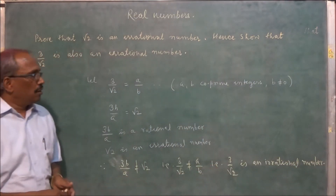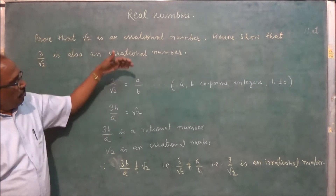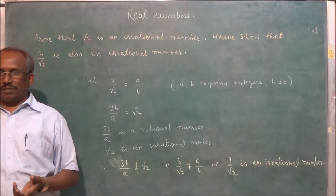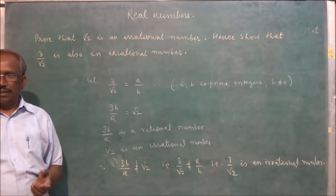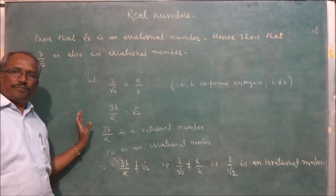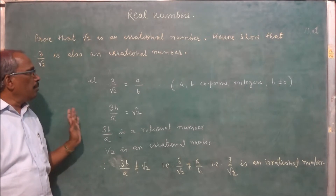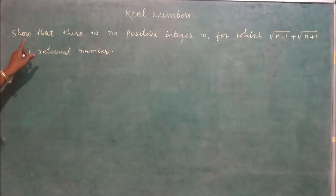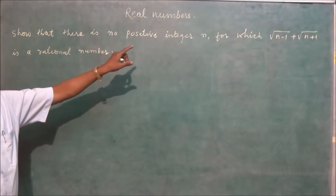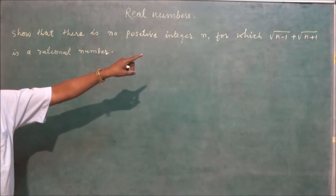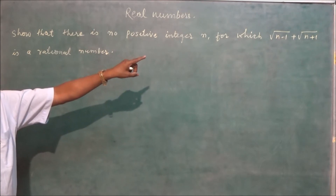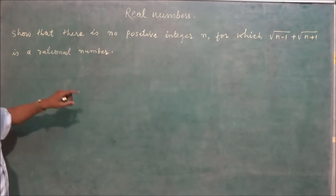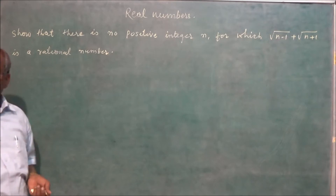So this type of question will be asked for 4 marks. Let us see one more important example: show that there is no positive integer n for which under square root of n minus 1 plus under square root of n plus 1 is a rational number.